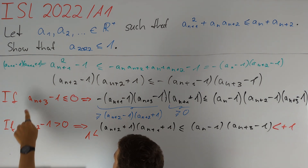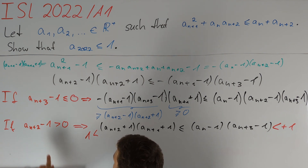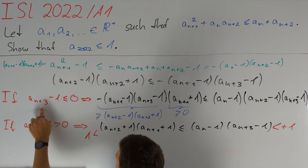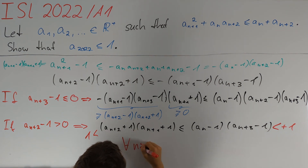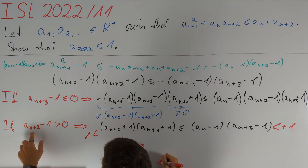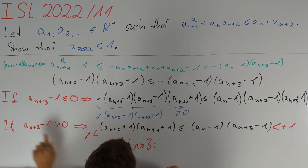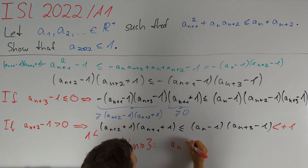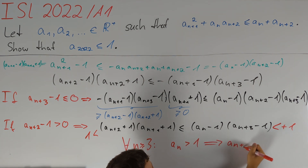We conclude that our two assumptions can't both be true. In other words, if the second one is true the first must be false. So for any integer n ≥ 3, if aₙ₊₂ > 1 then we must also have aₙ₊₁ > 1, and more generally if aₙ > 1 we must also have aₙ₊₁ > 1.